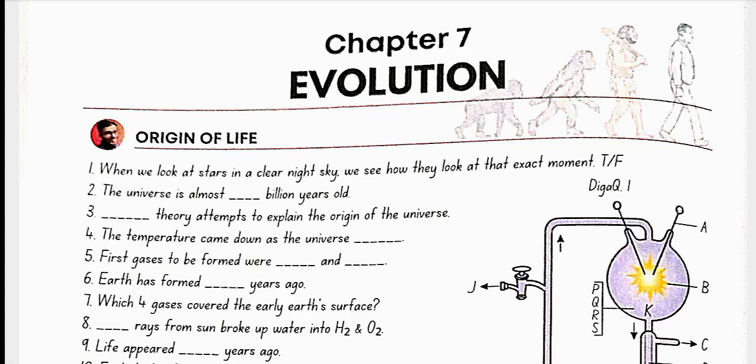Chapter 7 Evolution, Origin of Life. When we look at stars in a clear night sky, we see how they look at that exact moment. No, false. The universe is almost 20 billion years old. Big Bang Theory attempts to explain the origin of the universe. The temperature came down as the universe expanded. First gases to be formed were hydrogen and helium.